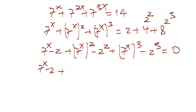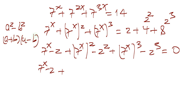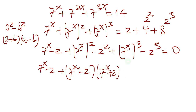Now I'm going to keep this term: 7 to the x minus 2. Plus, we have a difference of squares here — a squared minus b squared equals (a + b)(a − b). Applying that, we have (7 to the x minus 2) multiplied by (7 to the x plus 2).